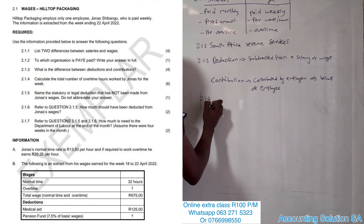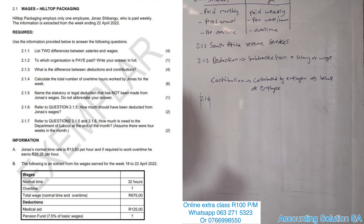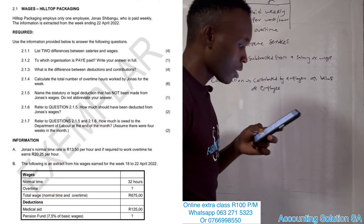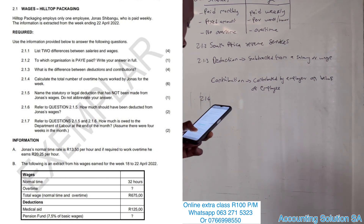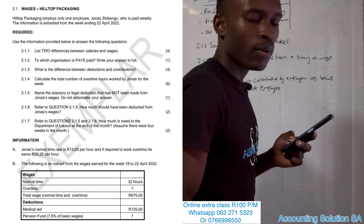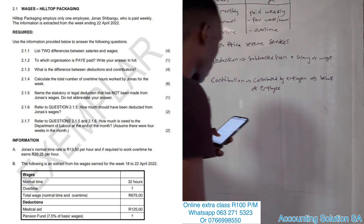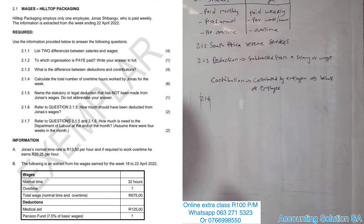The next question asks: calculate the total number of overtime hours worked by Jonas for the week. Let's look at the information. Jonas's normal time rate is R13 per hour, and when he is required to work overtime he earns R20.25 per hour. The extract shows his wages for the week of the 18th to 22nd — in other words he worked for two weeks during April. We have normal time hours, overtime hours, total wage, and deductions for medical aid and pension fund. The question is: how many overtime hours did he work?